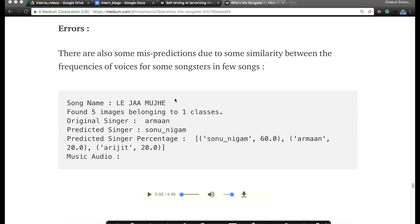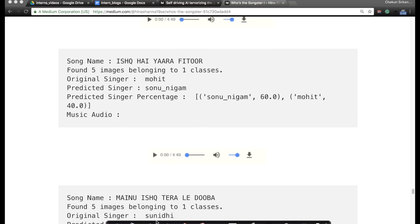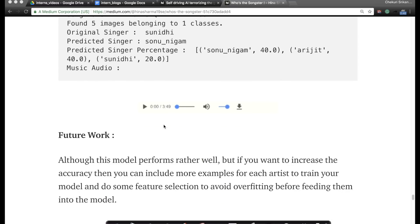For example, there is this song 'Leja Mujhe'—the original singer is actually Arman, but the predicted singer is Sonu Nigam. But if you look at the probabilities: Sonu Nigam is 60 percent, the second singer is Arman with 20 percent, and Arjit with another 20 percent. So the model is not really crazy. She calls out very clearly some of the mistakes. In another case, the original singer is Mohit but the predicted singer is Sonu Nigam with 60 percent and Mohit with 40 percent. It's a very interesting case study where she looks at both positive and negative cases.